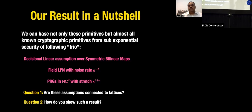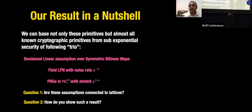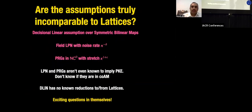We show that if all three assumptions are hard, you can build FHE and a host of other primitives. Now, before proceeding, I want to address two questions. First: are these assumptions really incomparable to lattices? And second: how do you even approach showing such a result?